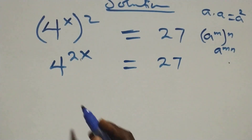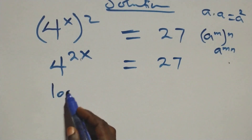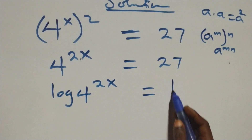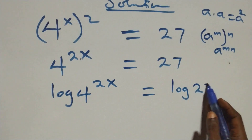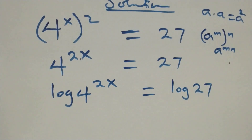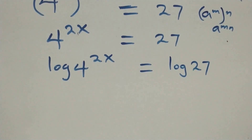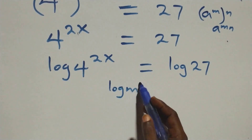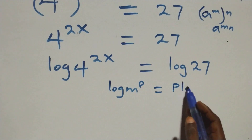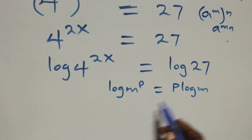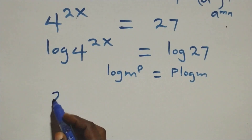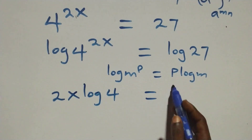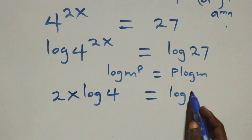The next step: we take the log on both sides and we have log of four raised to the power two x equals log of twenty-seven. We apply the power rule of logarithm — log m raised to power p is the same as p log m — so this becomes two x times log four equals log twenty-seven.